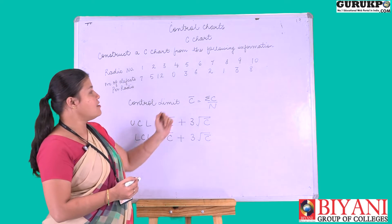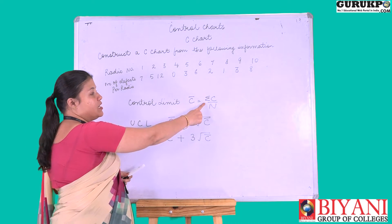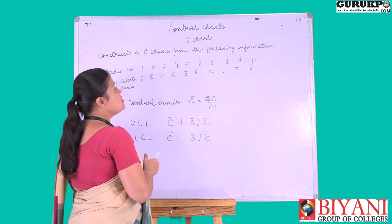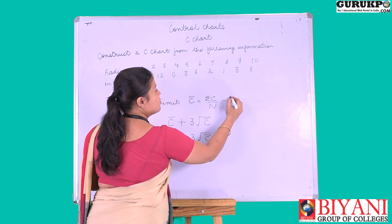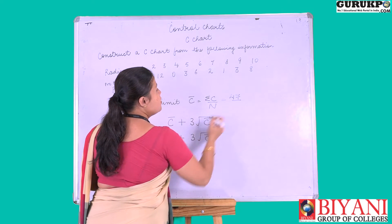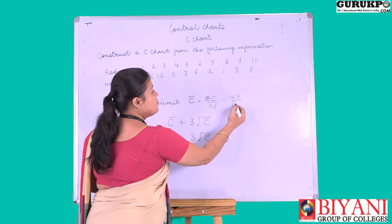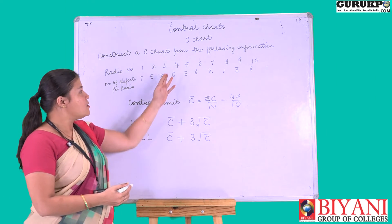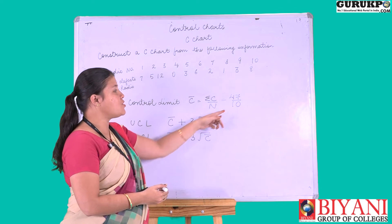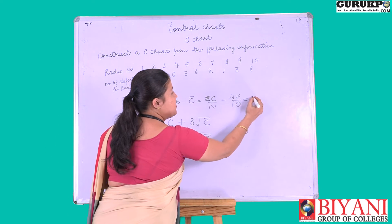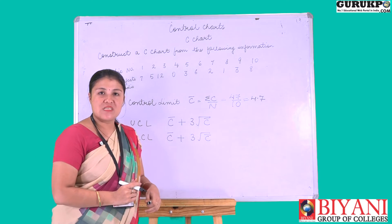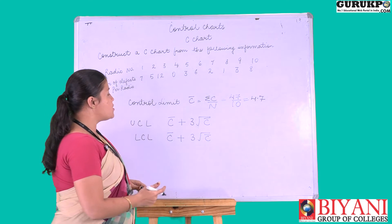As stated in the formula, first we have to calculate or sum up the number of defects given in this question. After summing up, the total number of defects comes to 47, and the number of radios given to us is 10. So c-bar arrives at 4.7. Therefore, our control limit is 4.7.